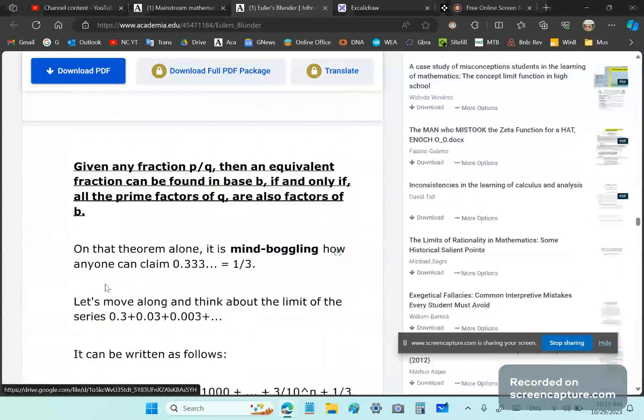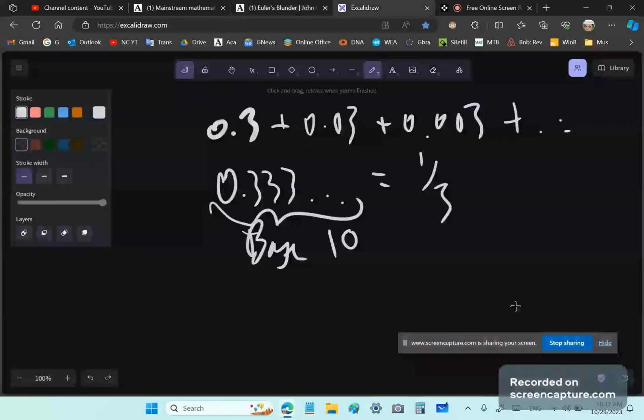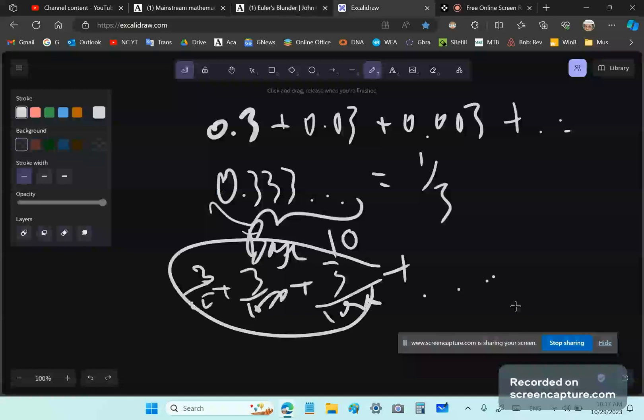There is an important number theorem which I'll place a link to that says given any fraction P over Q, then an equivalent fraction can be found in base B if and only if all the prime factors of this Q are also factors of B. In no other case can you express it. And you can't write dot dot dot at the end of a partial sum and say that represents a number because the measure is never complete. This here is a measure, people.